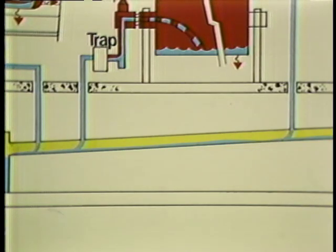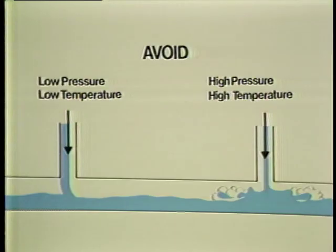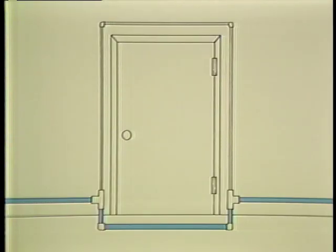The return main must be sloped in the direction of flow at least one quarter inch per ten feet. Trap discharge lines must enter return lines at the top. Avoid discharging low and high pressure returns into the same return main. High pressure lines release high temperature condensate. If this condensate combines with lower temperature, low pressure trap discharges, water hammer can occur. When discharge lines must dip, such as passing under a doorway, avoid air binding by piping a smaller parallel line over the doorway.